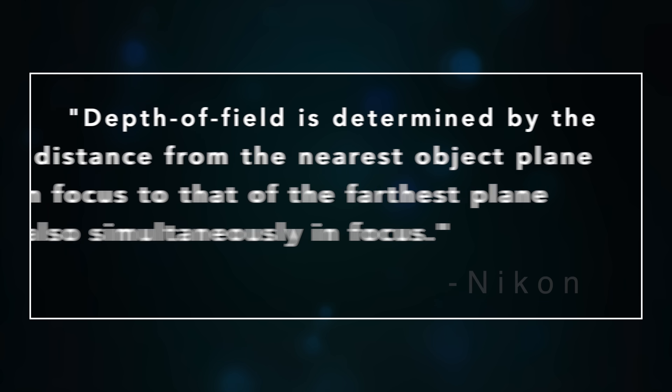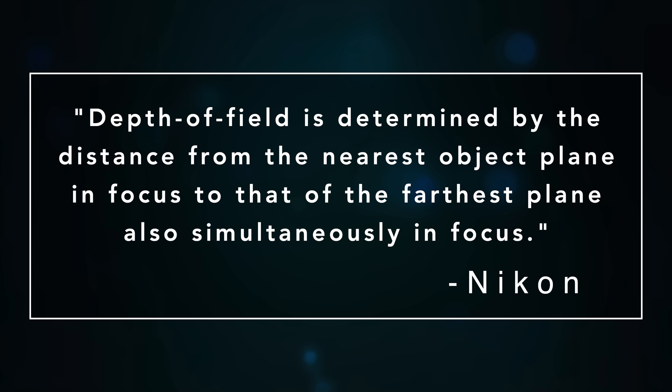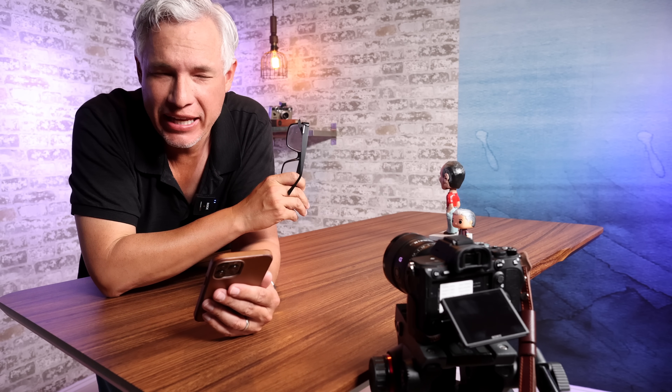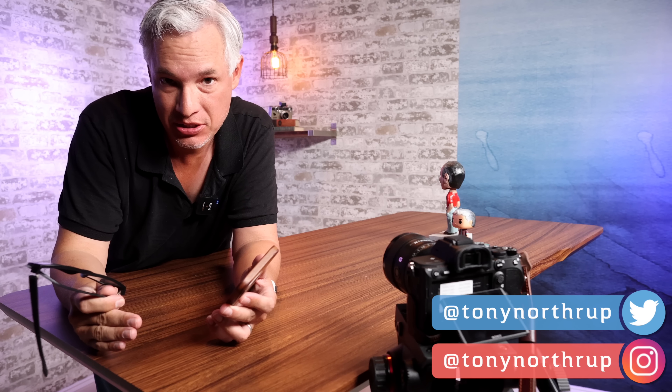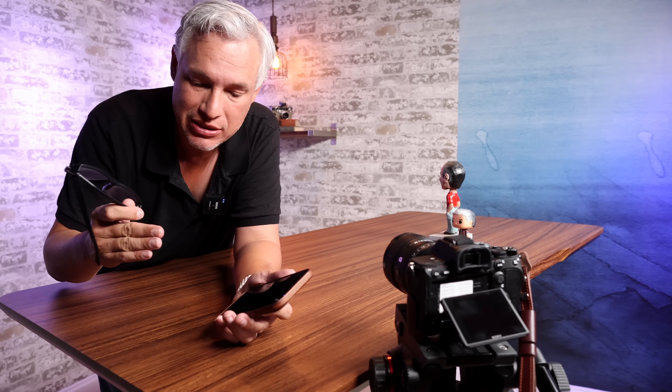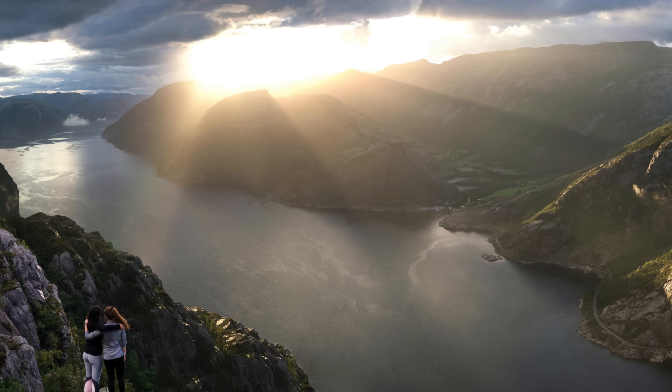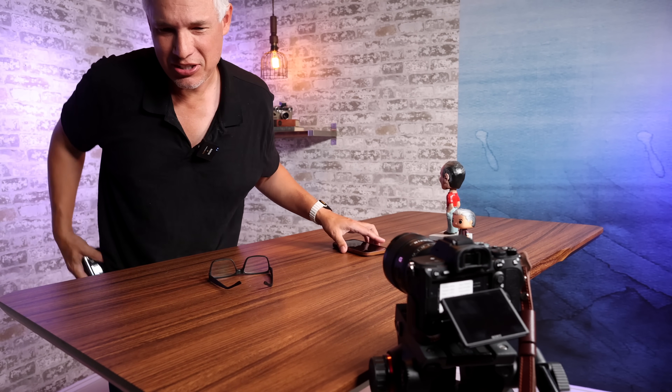Depth of field is determined by the distance from the nearest object plane in focus to that of the farthest plane also simultaneously in focus. But is it? Depth of field is the concept that you can focus on a range of distances in your photo — it's what allows you to get two or three rows of people in a group photo in focus, or to focus on a foreground subject while also getting the distant mountains in focus. But is it real, or is it total BS? We've tested a lot of the fundamental concepts of photography and found that they don't actually work the way we were taught. So let's put this to the test.